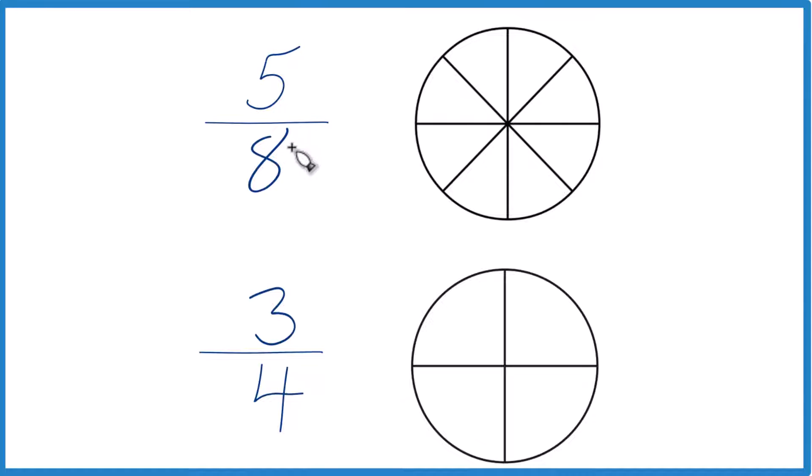So first off, you could just put it in a calculator, divide 5 by 8, then 3 by 4, and compare those decimals. You'd see that 3 fourths, that's the larger fraction.